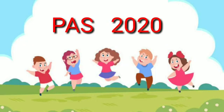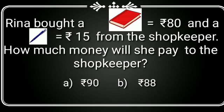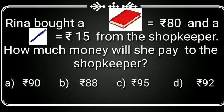Now we will solve a question related to the Punjab Achievement Survey. The question is: Rina bought a book whose cost is rupees 80 and a pen whose cost is rupees 15 from the shopkeeper. How much money will she pay? The four options are: rupees 90, rupees 88, rupees 95, and rupees 92. By adding rupees 80 and rupees 15, the total is rupees 95, which is option C. So we will tick this option.